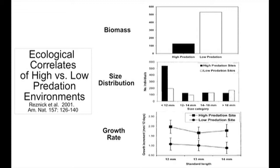These density differences can be seen just on opposite sides of a barrier waterfall. Populations that are only tens of meters apart can show these four- to five-fold differences in population density.